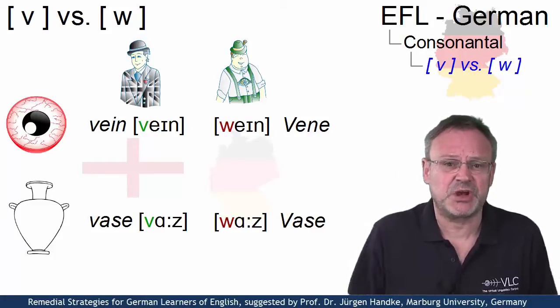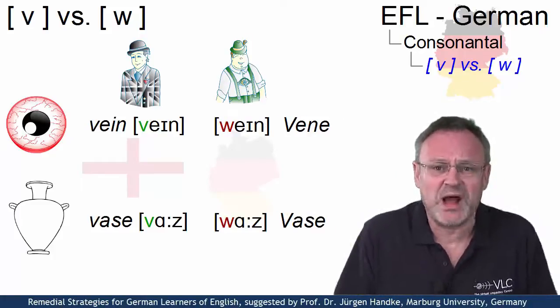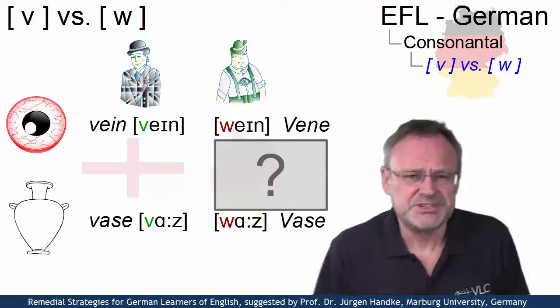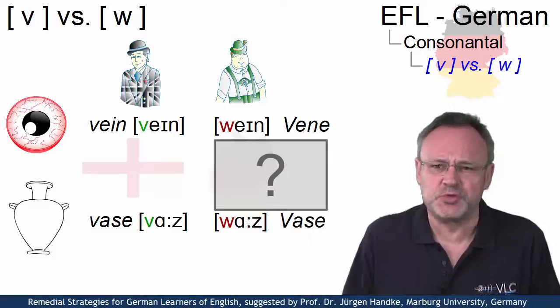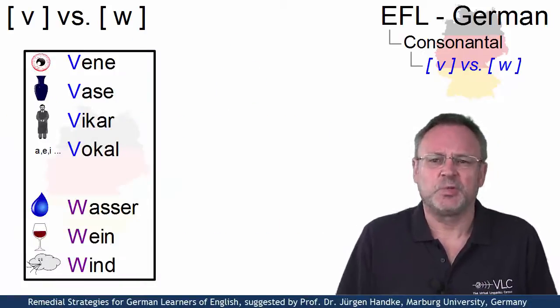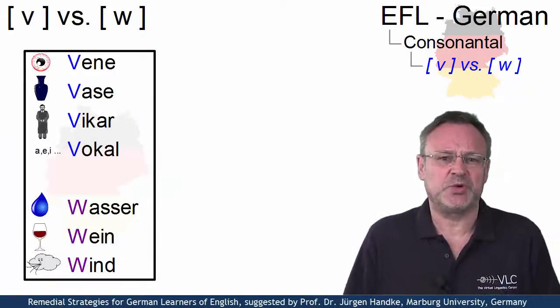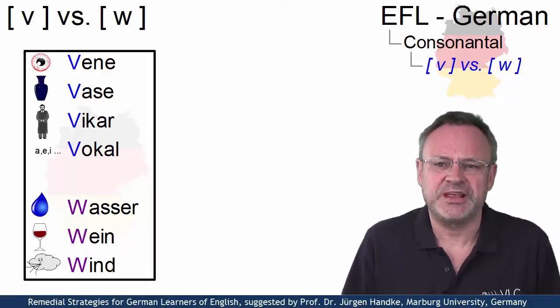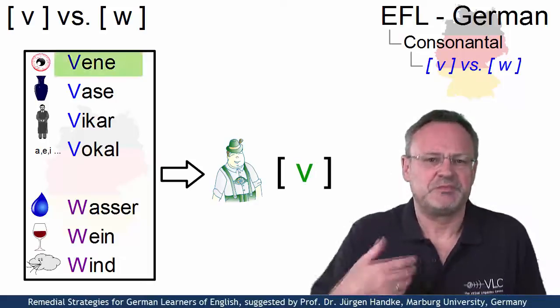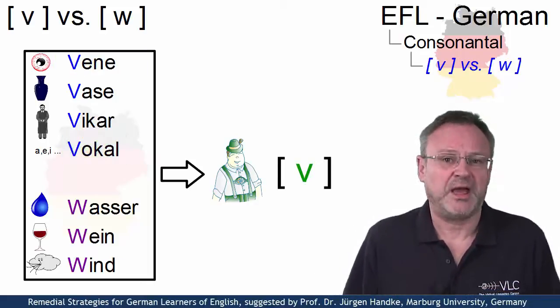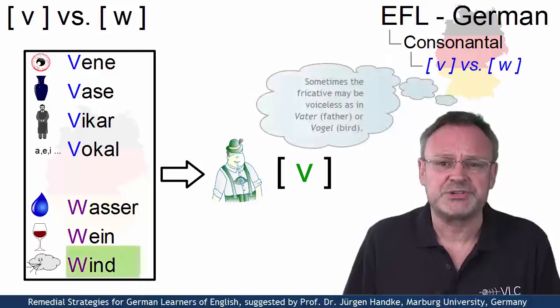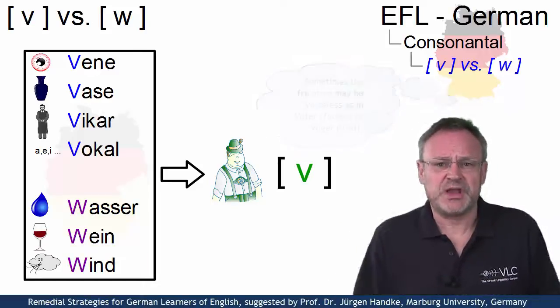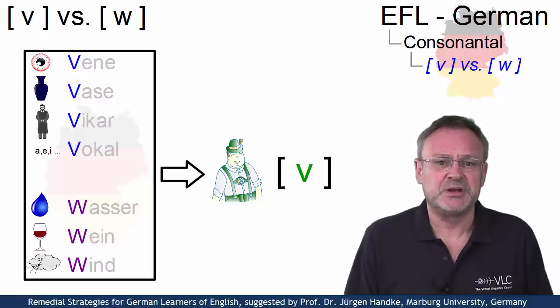The reason seems to be some sort of confusion. In German, words spelled with a W and with a V are both pronounced with a labiodental fricative, as in vena, vokal, and vasa, or wind. That is, in German we have two different letters but the same sound.